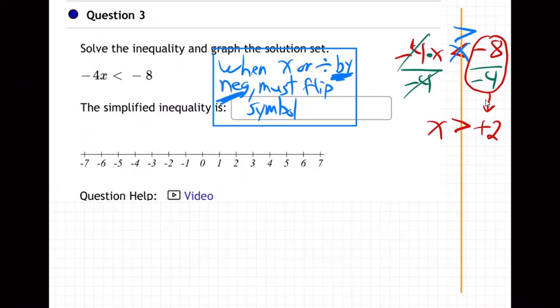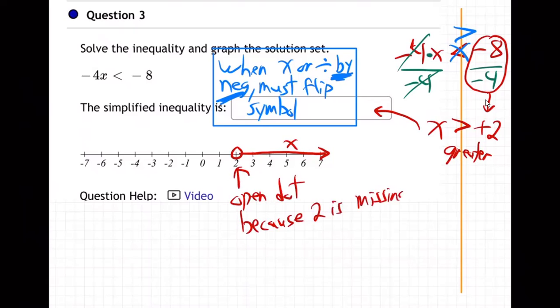That's what we put right here, that's the answer that goes right on that line. Then how do we put that on the number line? Remember that's going to be an open dot at 2 and it's going to go to the right like that, because x is greater.